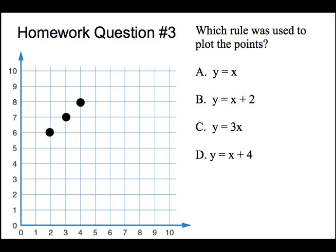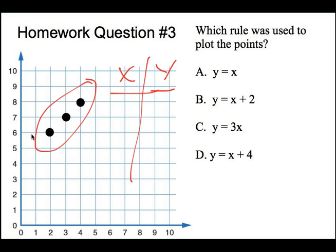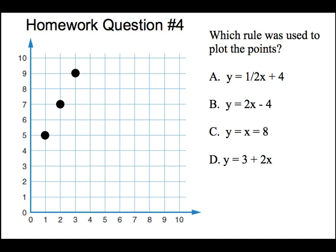Here is homework question number 3. So your job again is to take your coordinate points, put them into an XY chart, and then just like I did on the last problem, you're going to get rid of all the wrong answers to finally get to the right answer. And here is question number 4 on your homework. Make sure again to make your XY chart and then do process of elimination with all your answers to get to the correct rule.